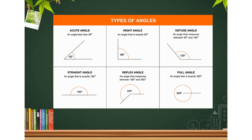A right angle is 90 degrees. If an angle is less than 90 degrees, then it is called an acute angle, which you can see on the left side. If an angle is more than 90 degrees, then it is called an obtuse angle. All these angles have limits. Acute angle lies between 0 and 90 degrees.